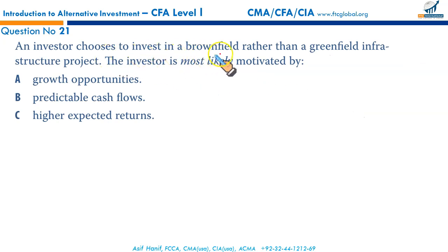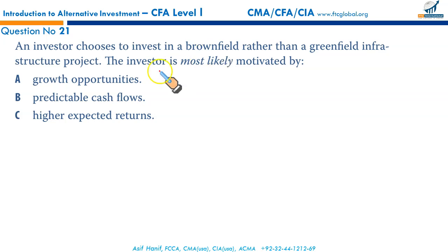An investor chooses to invest in brownfield rather than greenfield infrastructure. The investor is most likely motivated by predictable cash flows. Brownfield investment is investment in an existing infrastructure asset, likely to have steady cash flows compared to greenfield, which is a new project investment. Brownfield infrastructure investments are less risky and provide better predictable cash flows. B is the right answer.